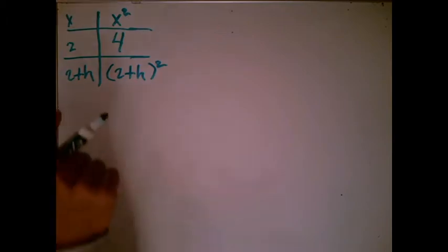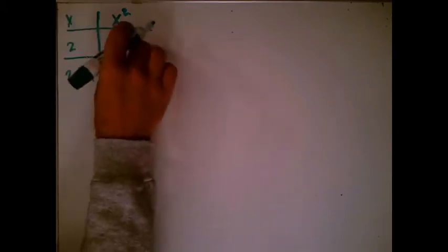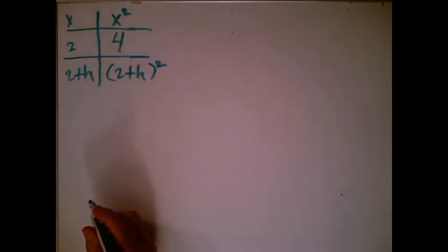Remember what we're doing: we have y equals x squared, which is supposed to be our distance traveled at any time t. We're at the point (2, 4), and we also have a point that's close by.